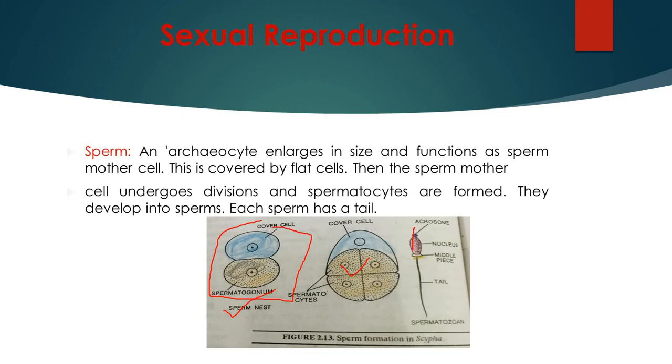This is a structure of a typical sperm which has a bead-like acrosome, then having a nucleus, middle piece and tail. So it is a mature sperm having this particular feature.